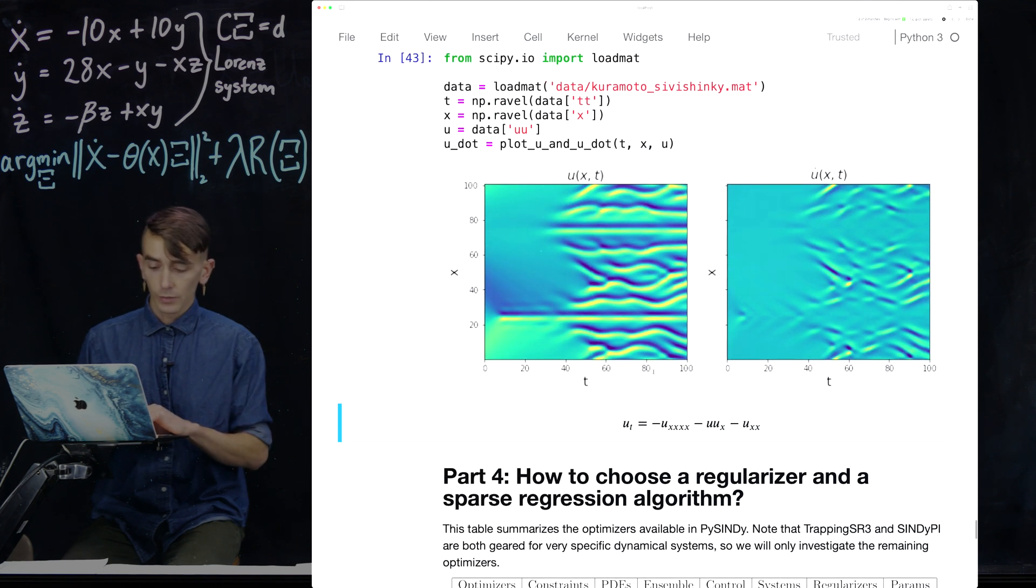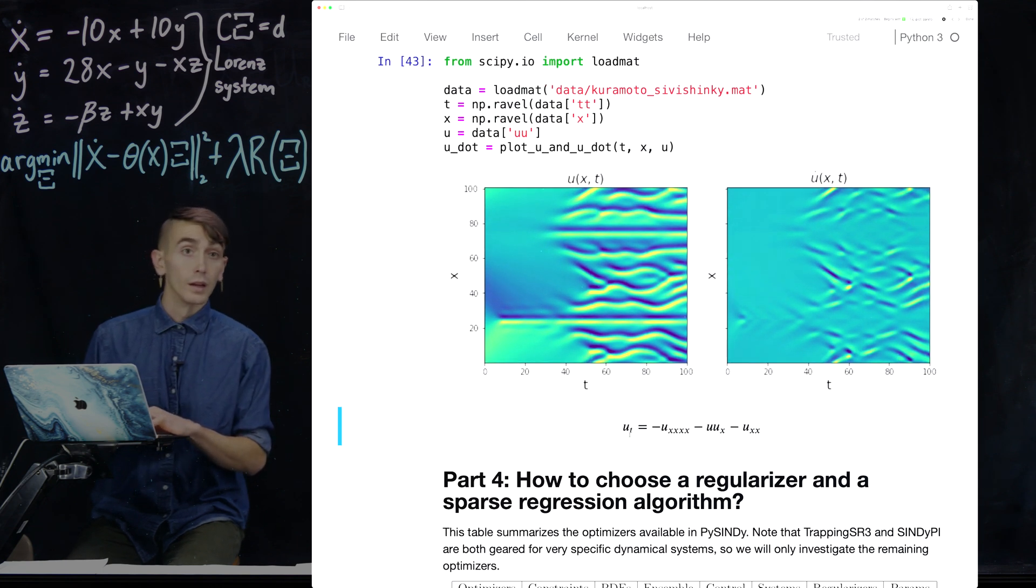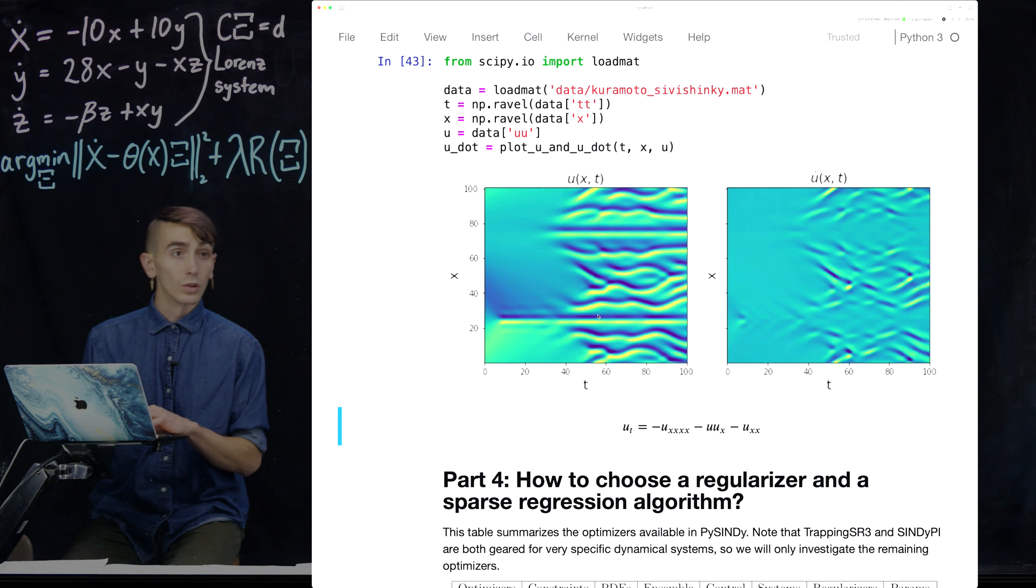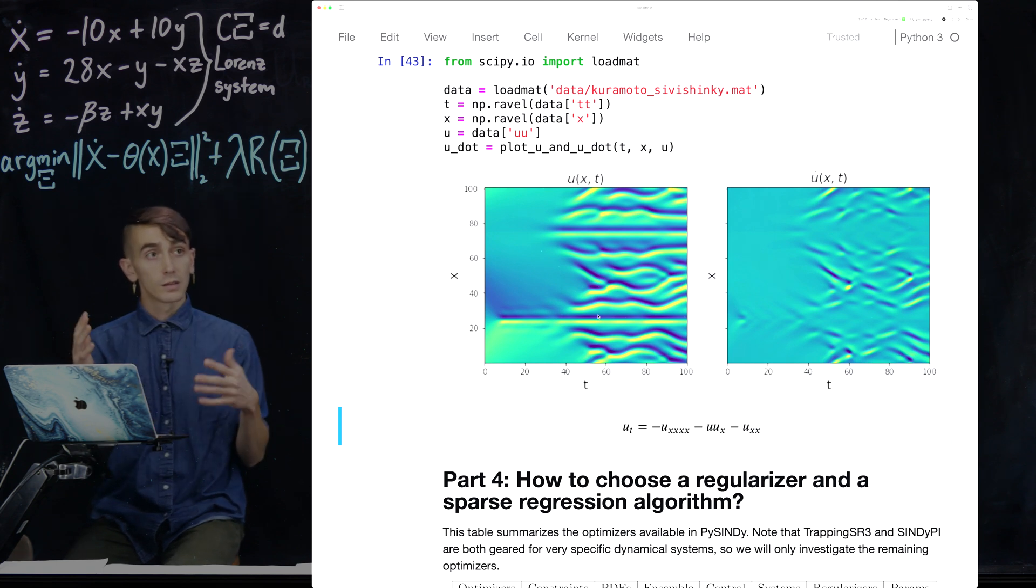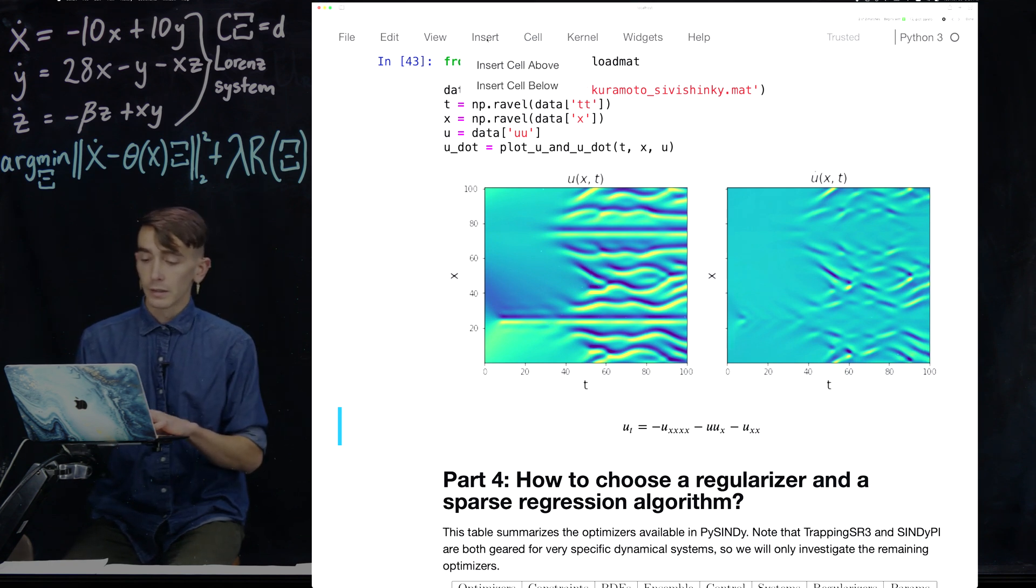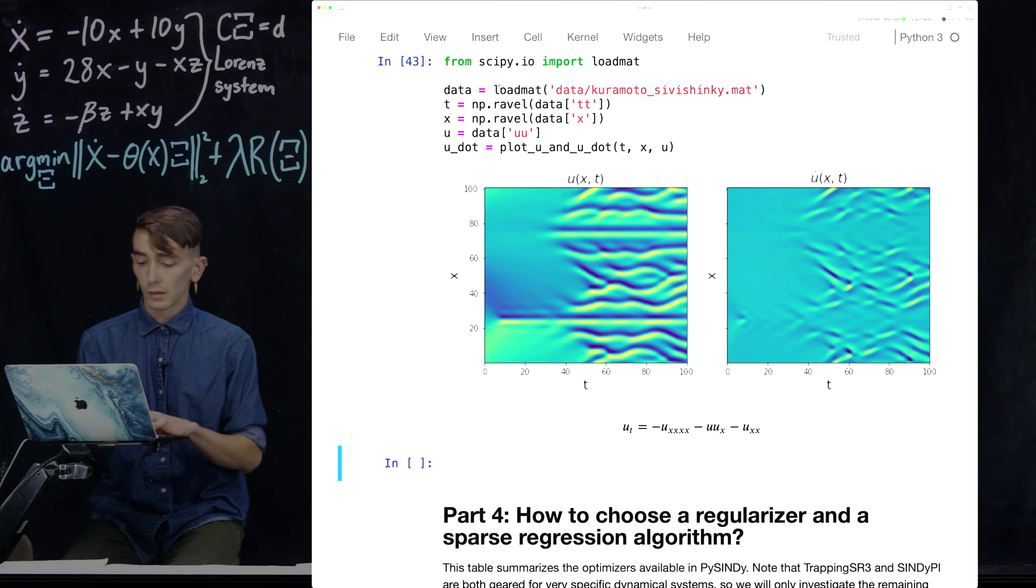Right, so it's a partial differential equation because it depends on derivatives involving both the time and space dimension. And you can see it's got this sort of complicated structure in XT space, and same with its derivative U dot, which is on the plot on the other side there.